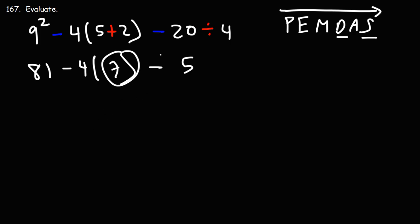Now, we don't want to subtract 7 and 5 because we need to multiply 4 and 7 first. Multiplication has more priority than subtraction. So we have 81 minus 4 times 7. 4 times 7 is 28, and then minus 5.